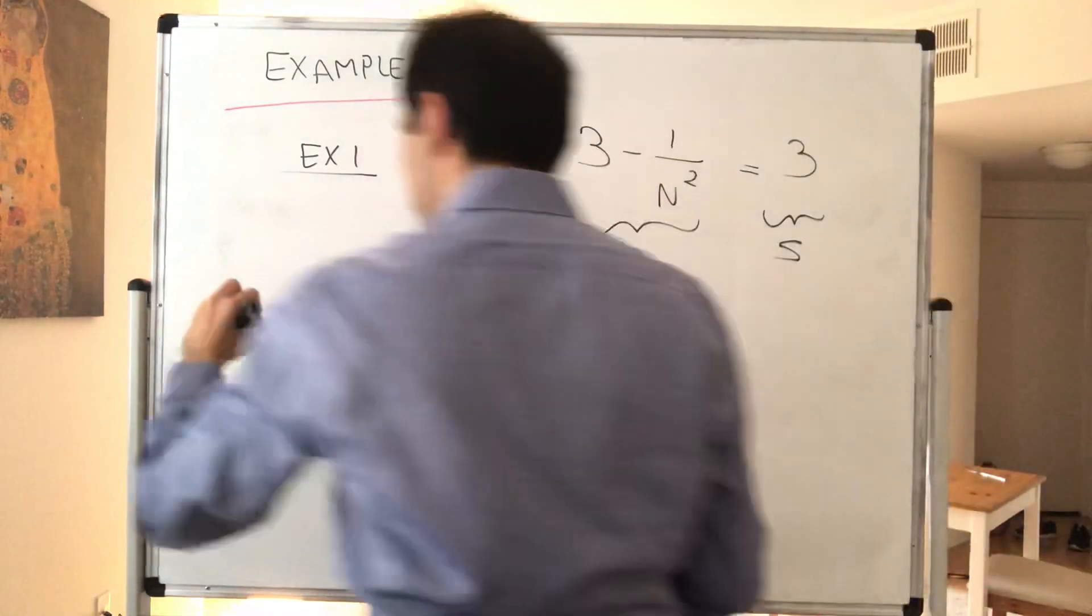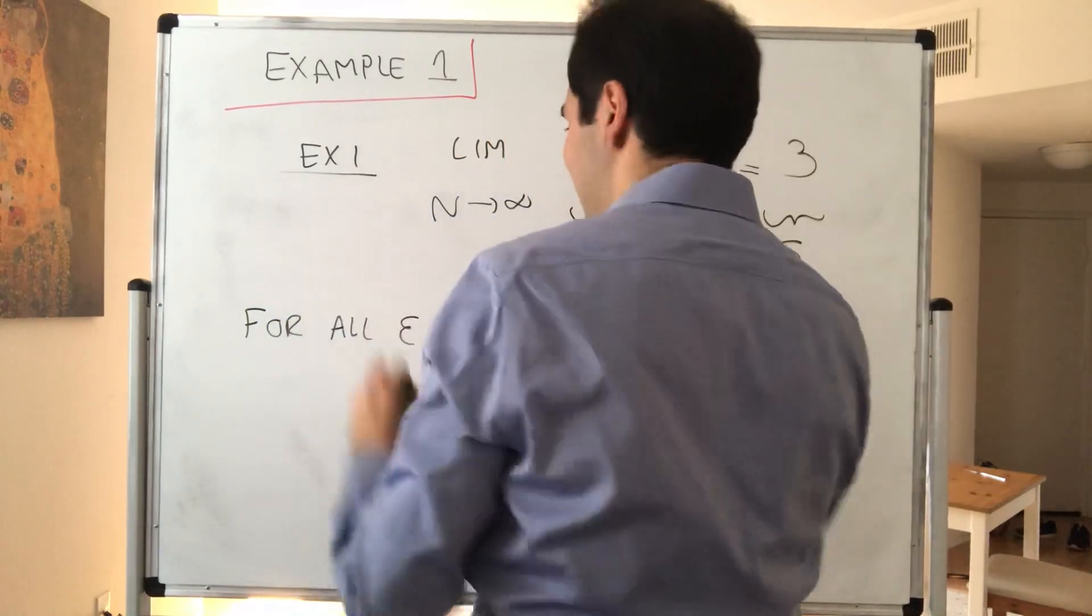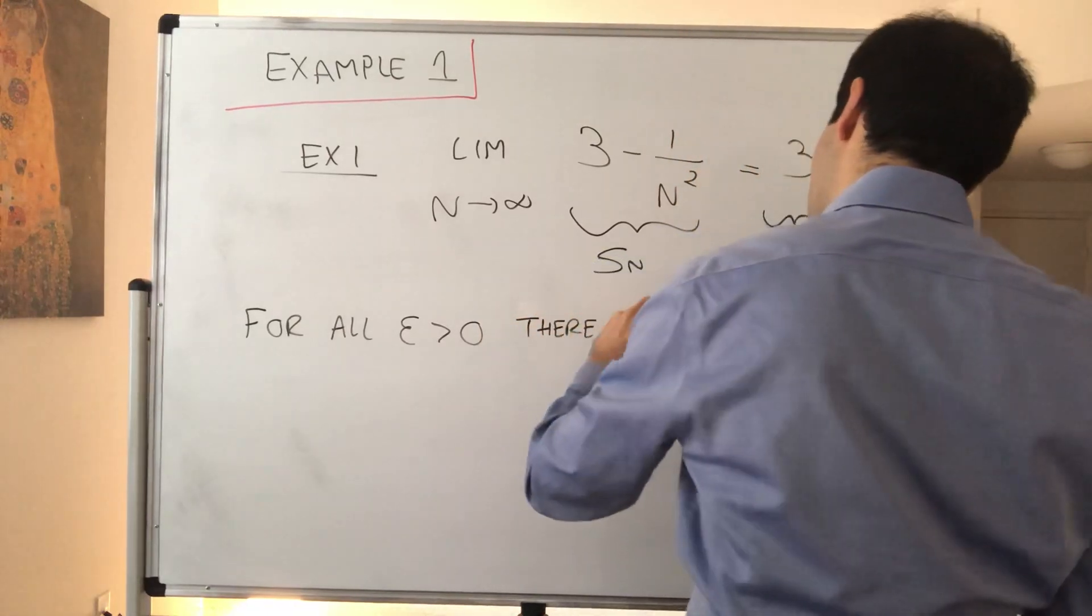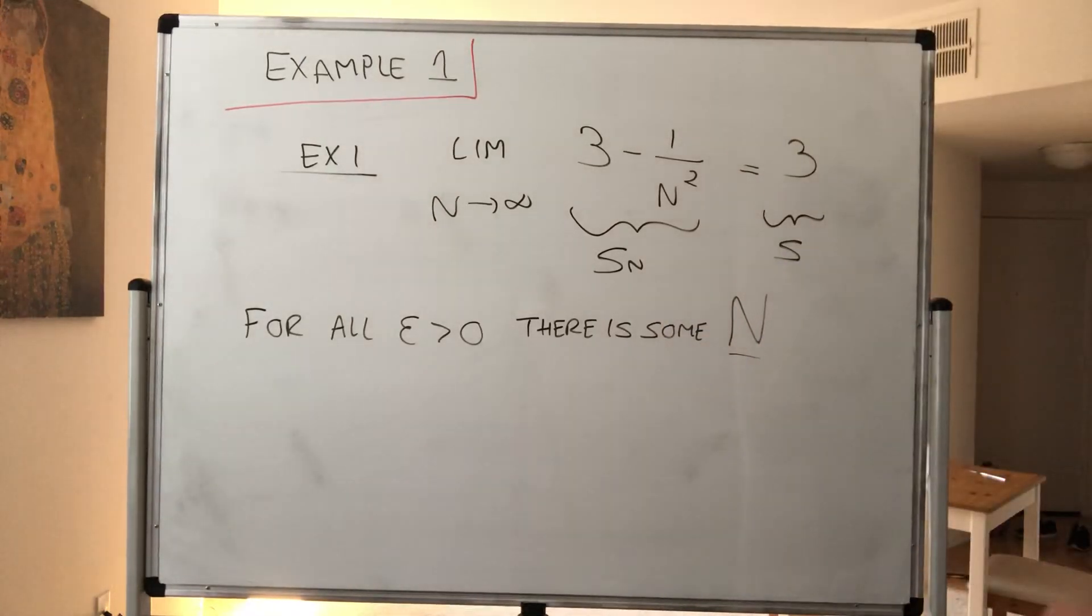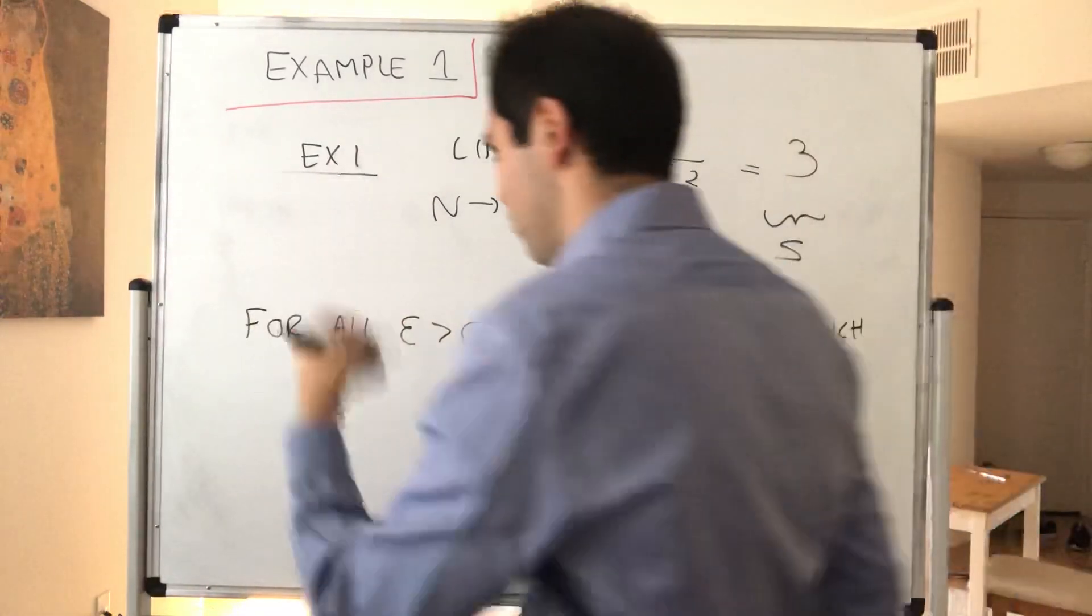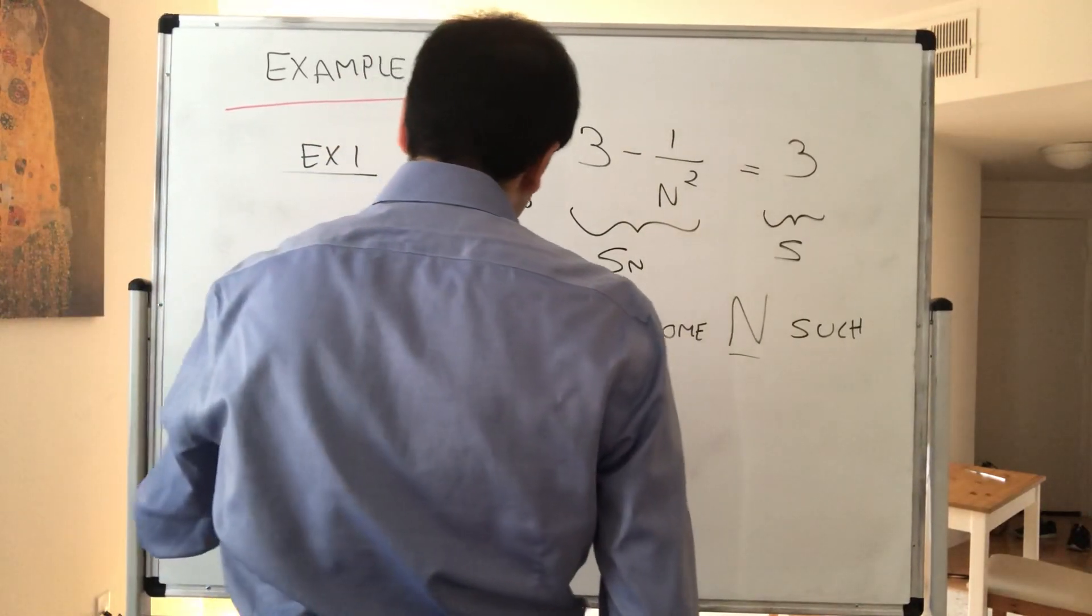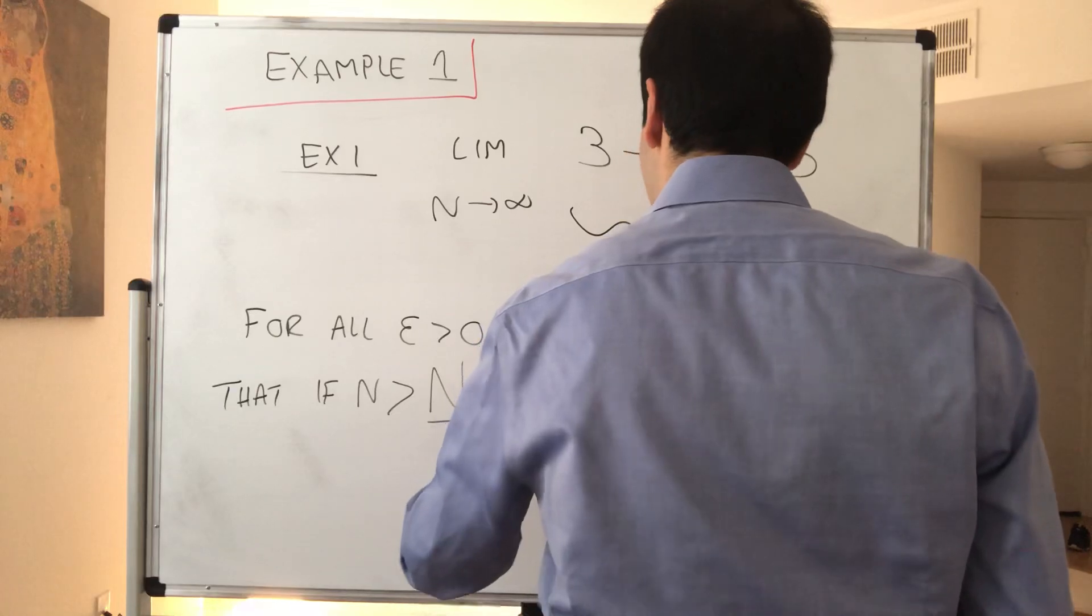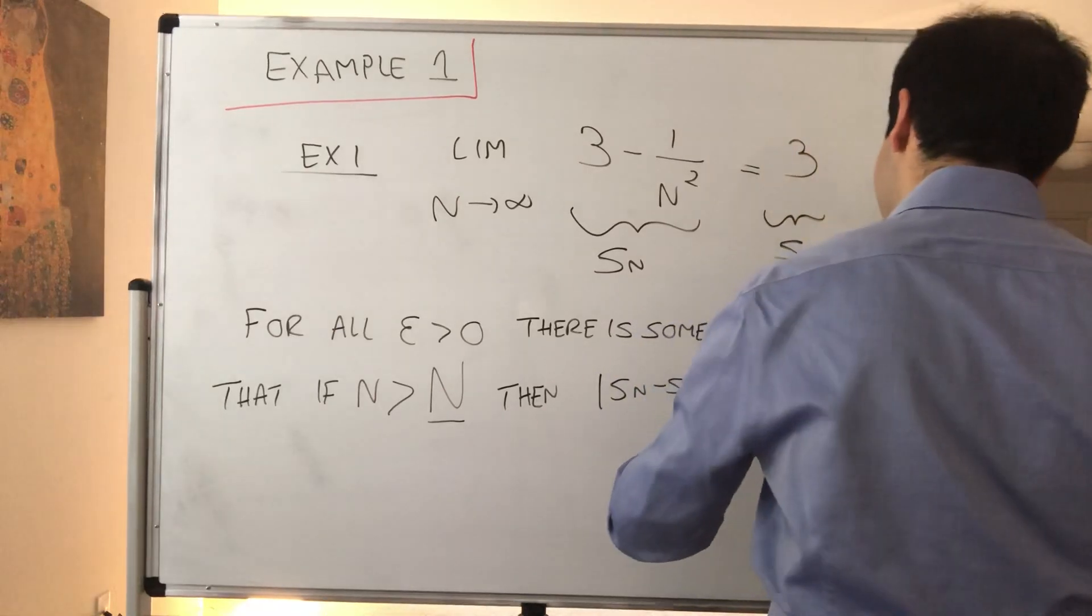So what we would like to show is that for all epsilon, again think the error, there is some threshold, capital N, which again I underlined just to emphasize it's capital, such that again for all n, if n is greater than capital N, so once you reach that threshold, then you're at most epsilon away from your limit. Then Sn minus S is less than epsilon.